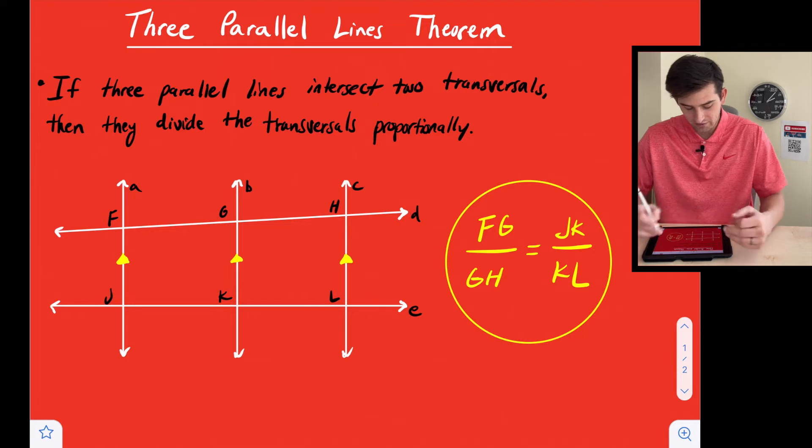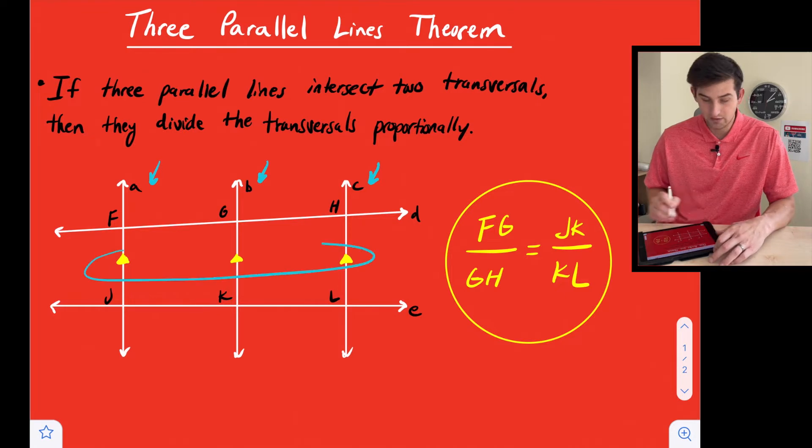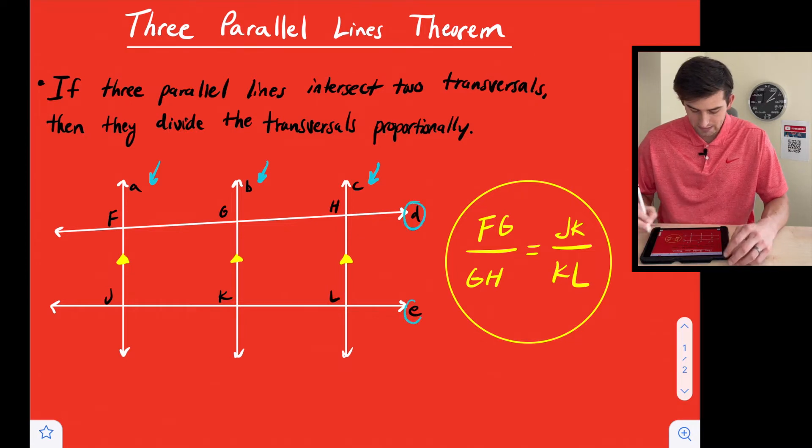So we look at our diagram right here. Our three parallel lines are lines A, B, and C. We know that because we have those arrows right there which tells us they are parallel. And our transversals would be line D and line E.